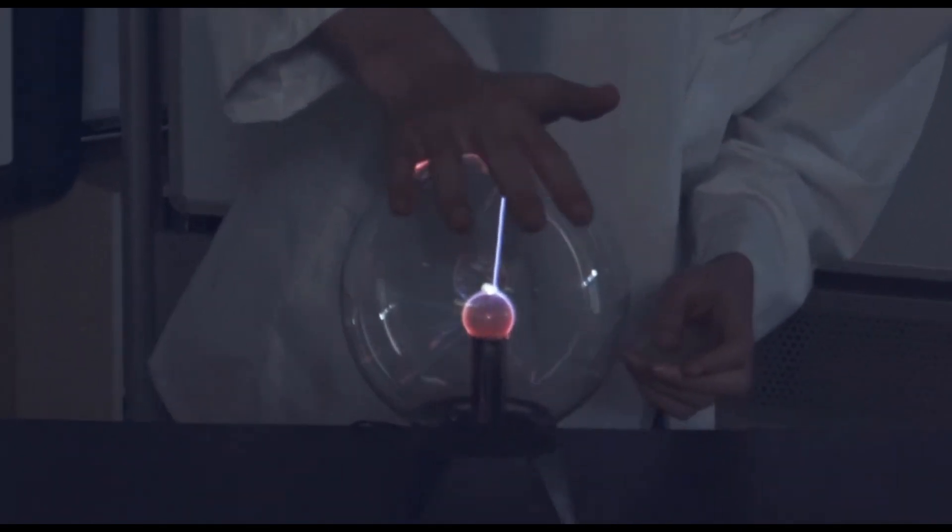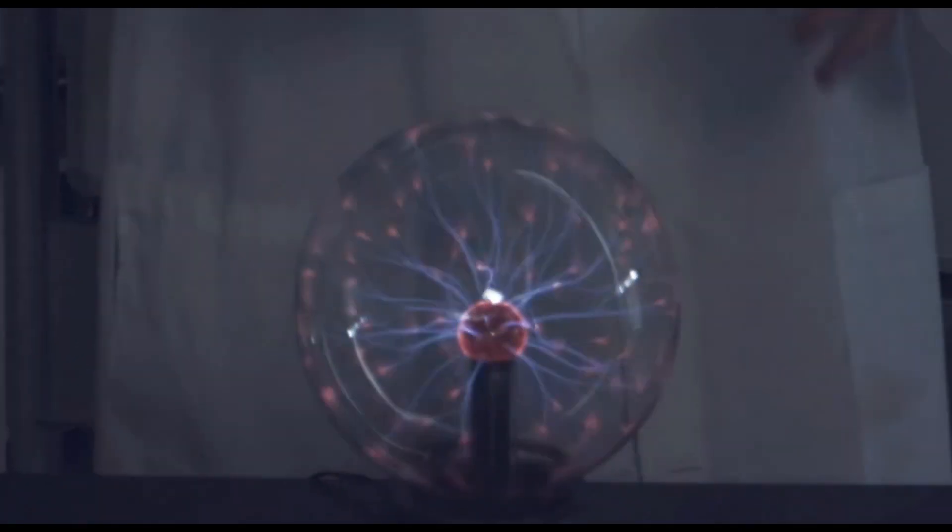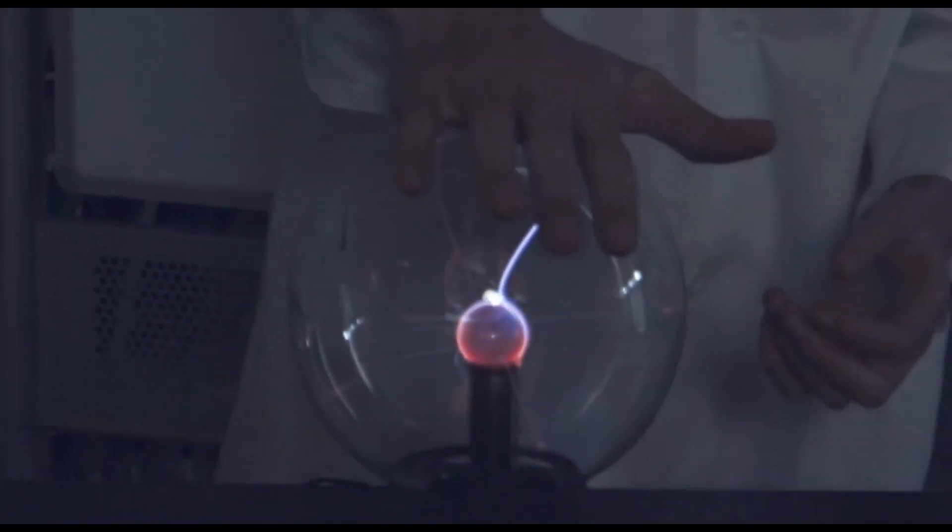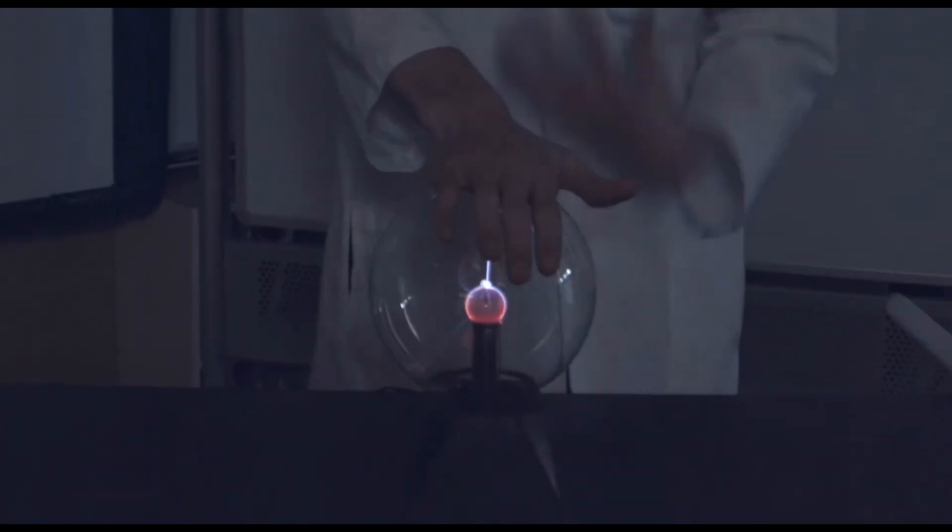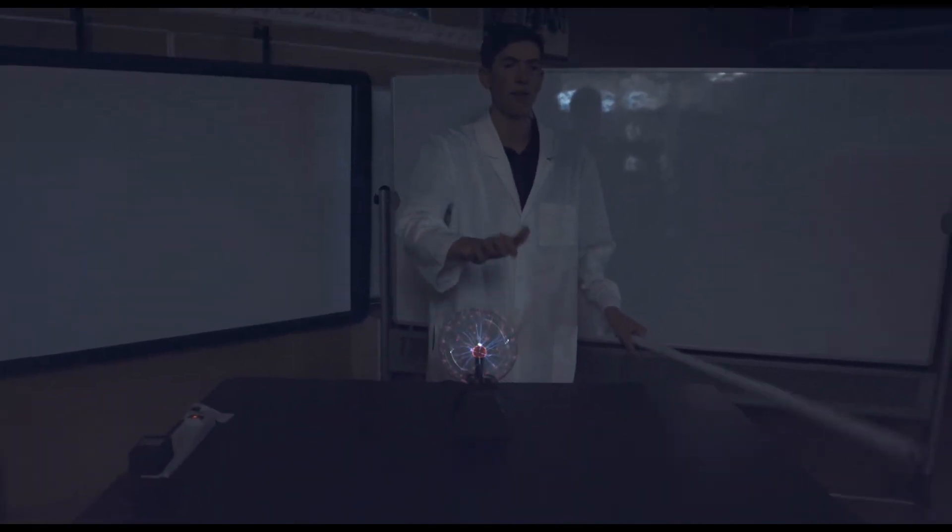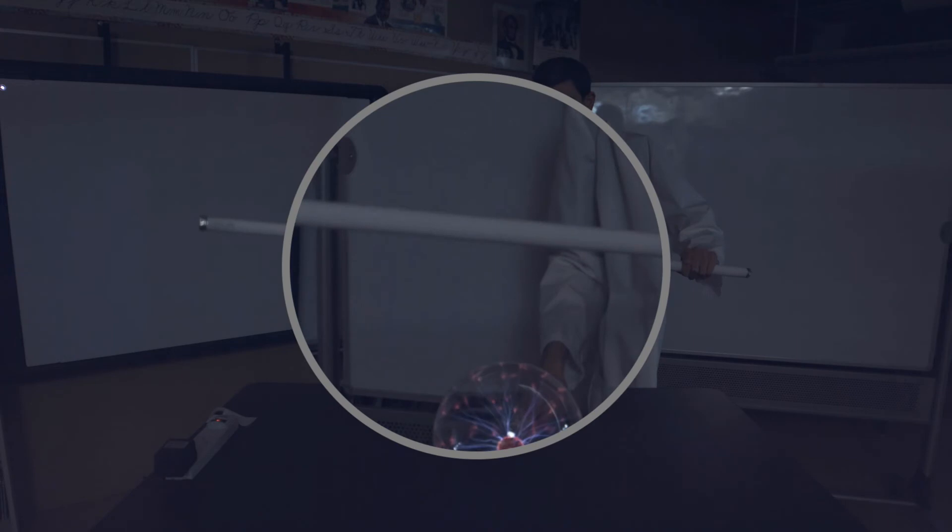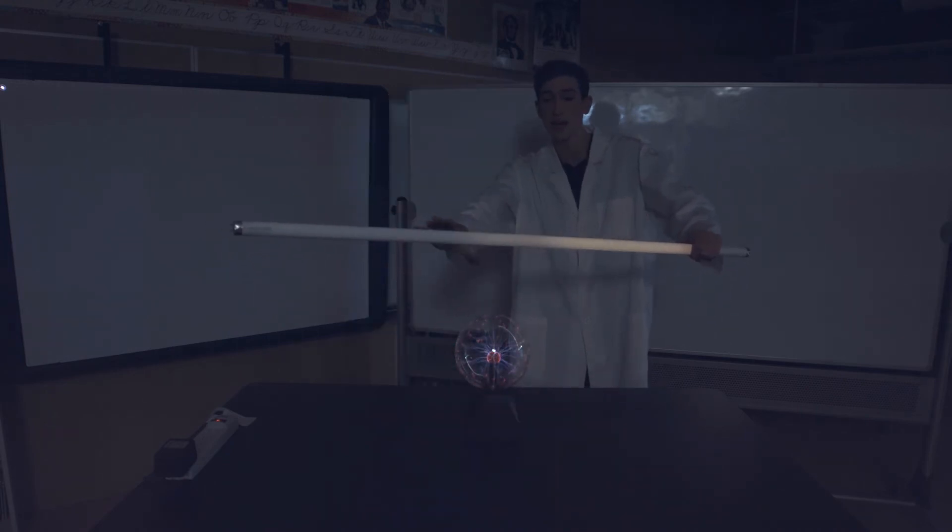As you can see, when my hand is not on it, all of these electrons are trying to find a chance to escape. But when I put my hand on it, they all go through me and into the ground. Let's see what happens when I take this fluorescent tube near the plasma globe. I don't even have to touch the plasma globe. As soon as I get it near, the electric field around it is activating it and causing the light.